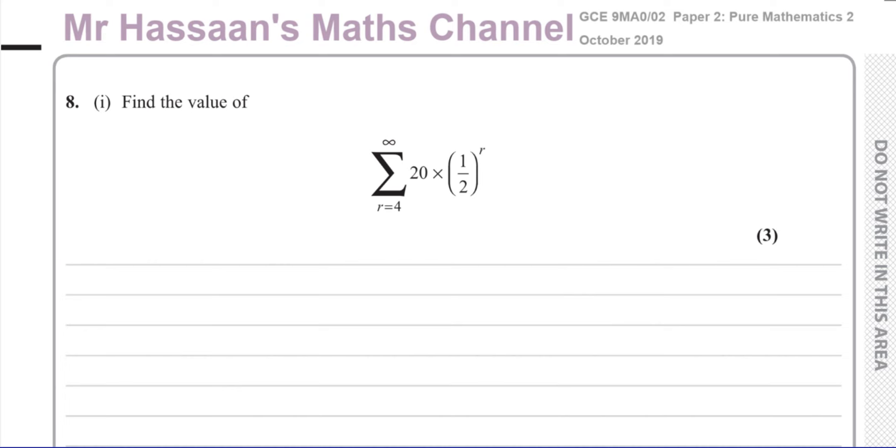So basically, what we have here, what we can do is, if you have the sum of a constant times some sort of expression where you have to put some values in, you can take the constant on the outside, so you have a times the sum of whatever that expression is. So what I can do here is I can write this as 20 times sigma, the sum of 1 over 2 to the power of R, from R equals 4 to infinity. That's one thing I can do. So now I can concentrate on this part here.